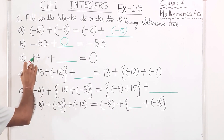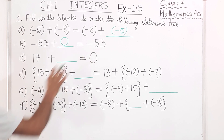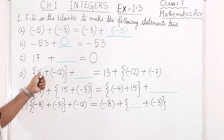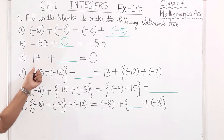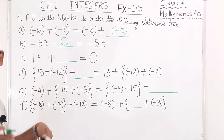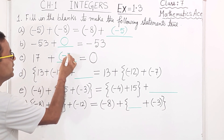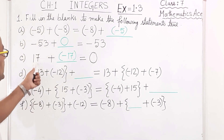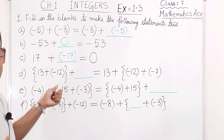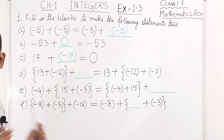Next one: 17 + ___ = 0. This matches with which property? Additive inverse. The additive inverse of 17 is minus 17. So the answer is minus 17. When you add an integer and its additive inverse, you get 0.